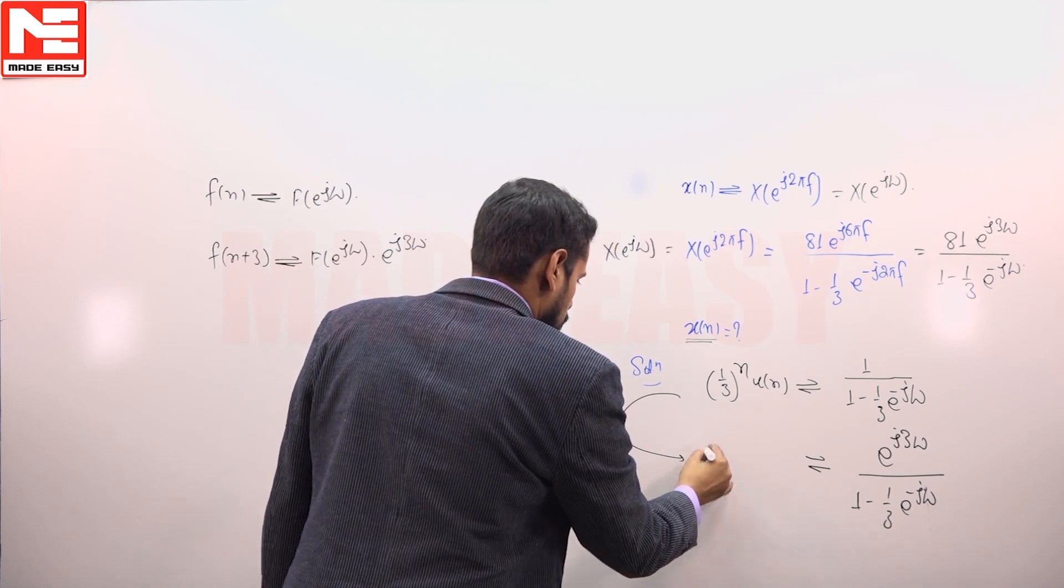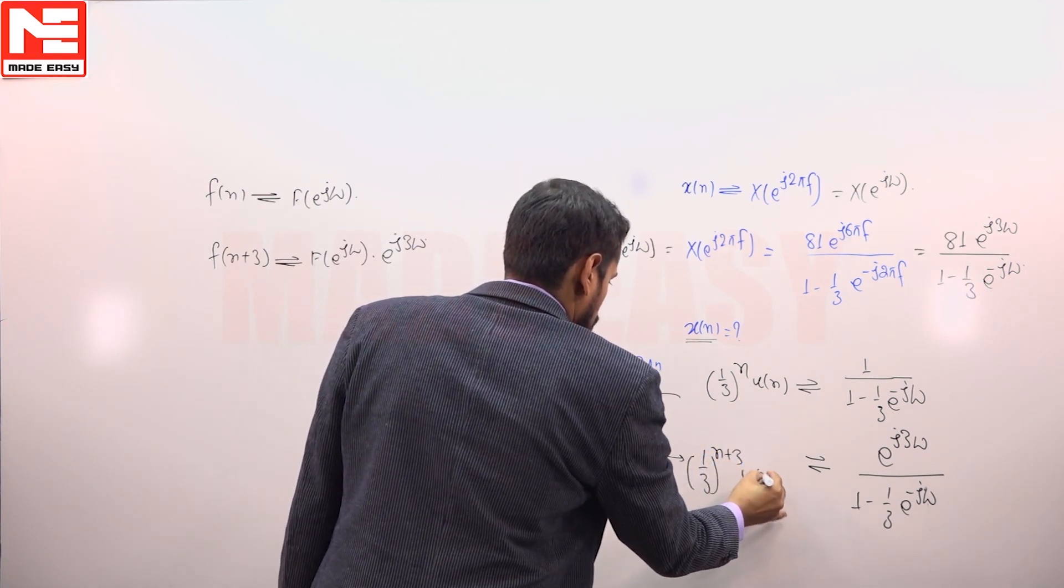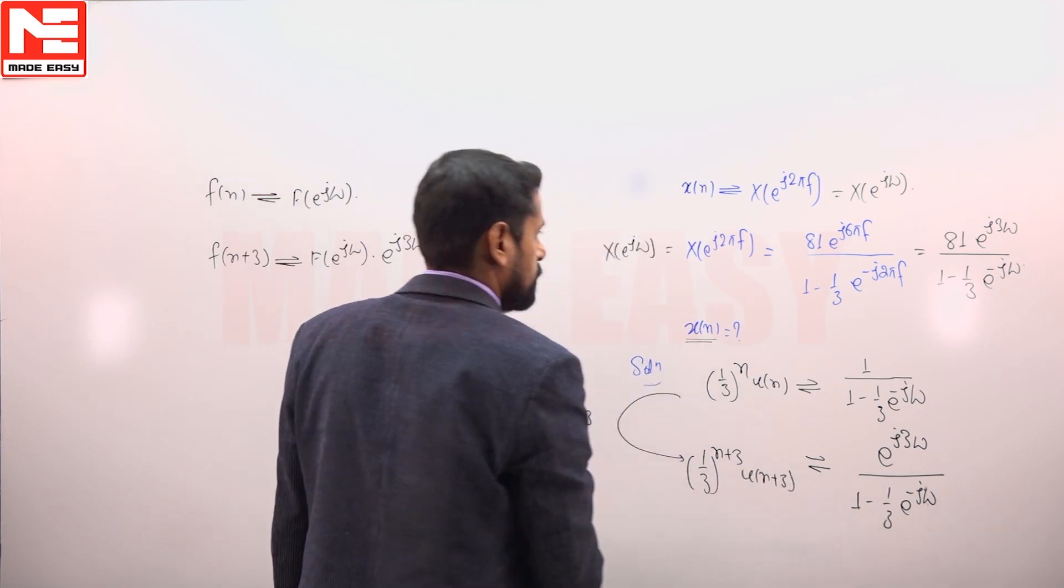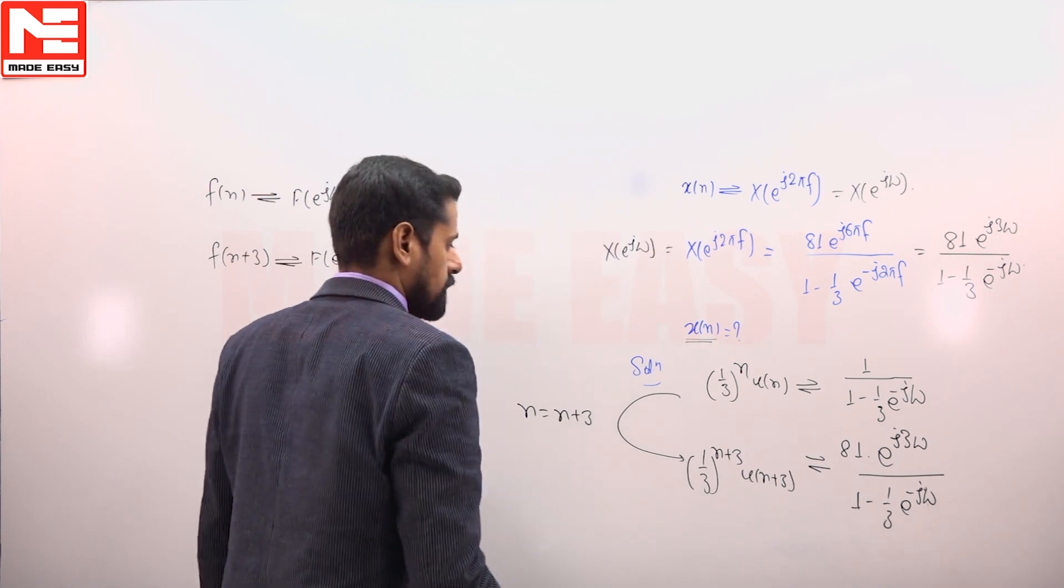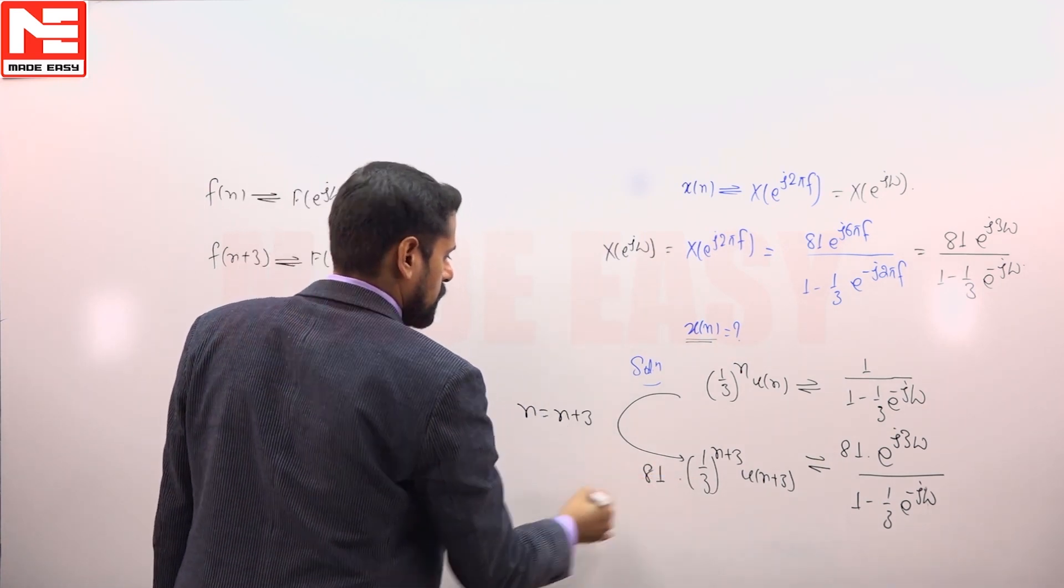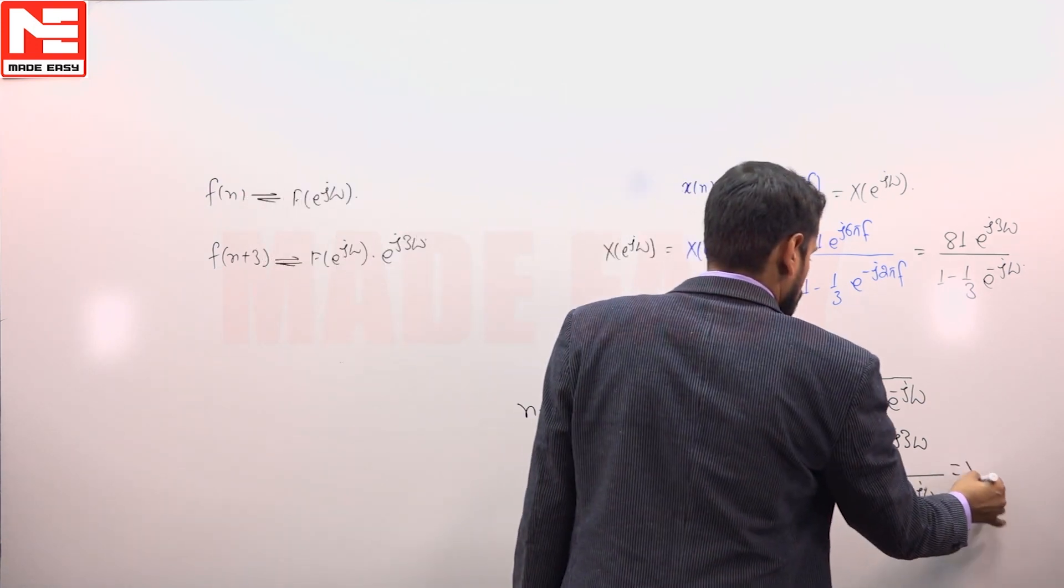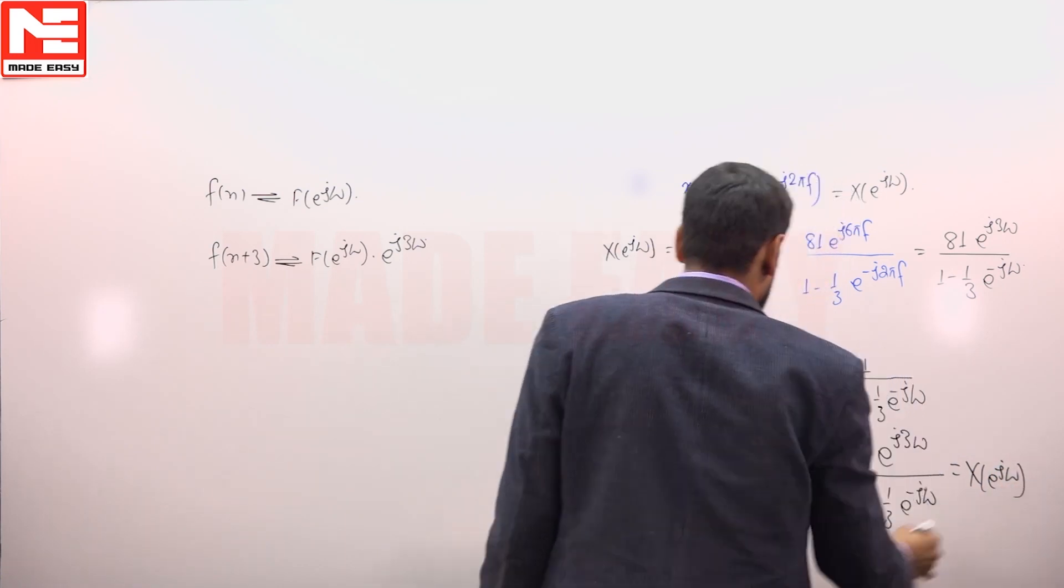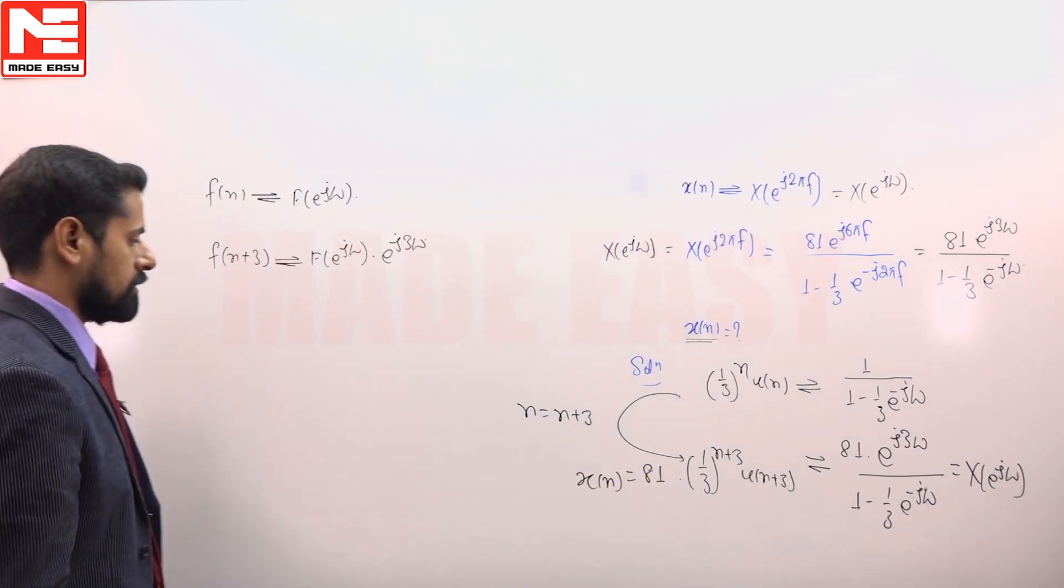So here we have to replace variable n with n plus 3. So function will be like this. Now we can multiply constants on both sides of this relationship. So we can multiply here 81 also. If this term is X(e^(jω)), then its inverse will be equal to x of n.